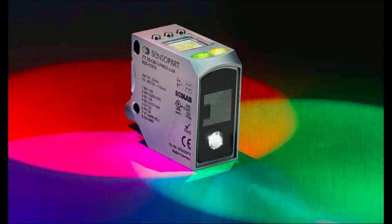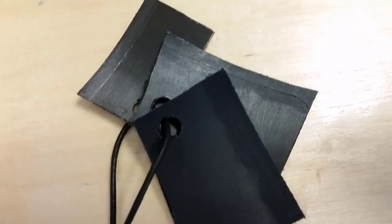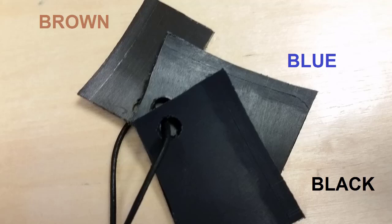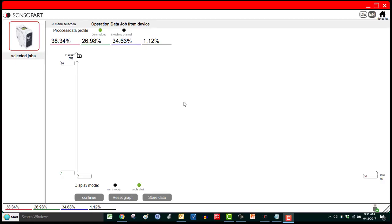In this next example, we have three dark plastic parts that look similar. They're actually brown, blue, and black. This sensor has red, green, blue, and intensity available in your PLC over IO-Link.